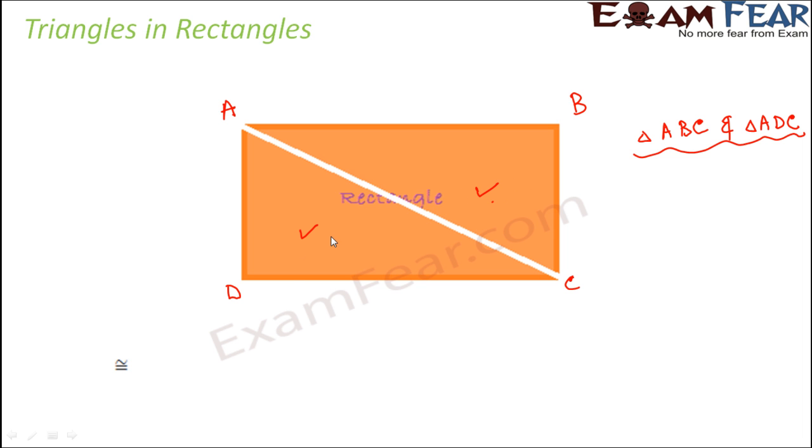So let us try to compare these two triangles. Here we see if you look at these angles, both of these angles are right angles. So basically angle ADC is equal to angle ABC is equal to 90 degrees. So these two angles are equal. Now when you look at AC, AC is a common side for both the triangles.